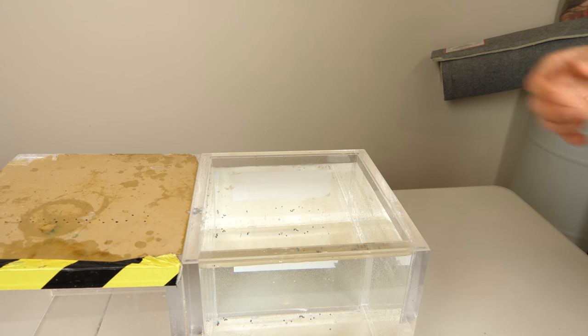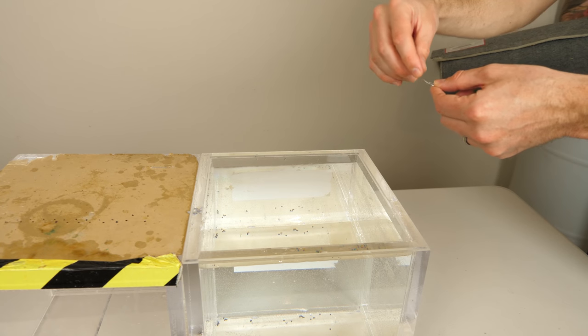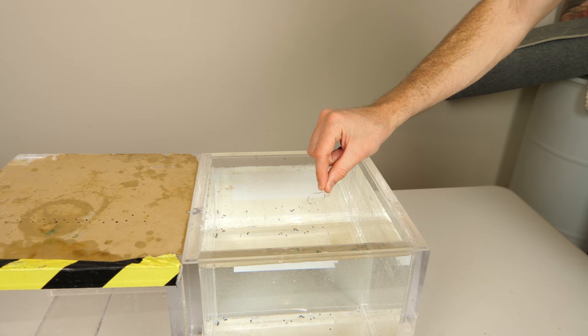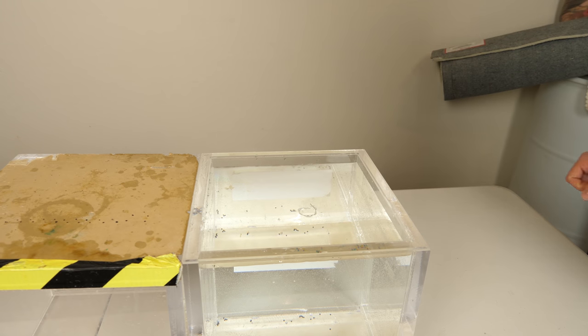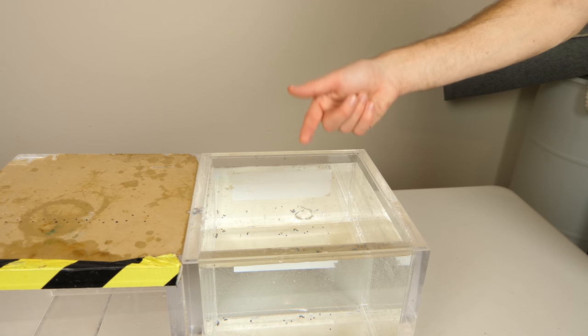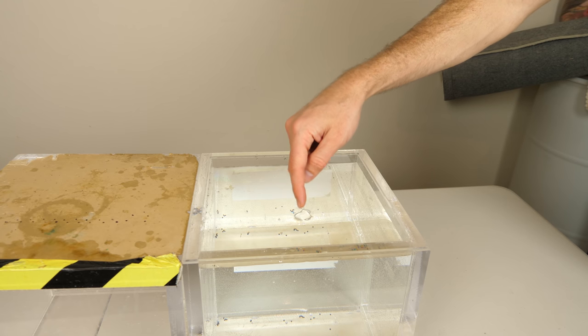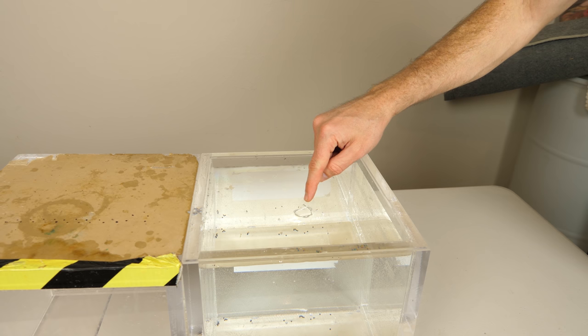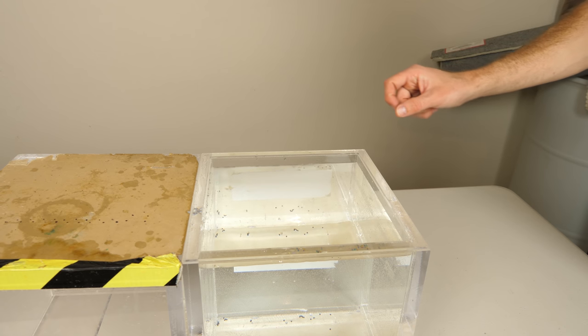So this same surface tension that stopped the water from falling out of the jar can also be used to float just regular things like pieces of wire on water. So even though this stainless steel is much more dense than water, it hasn't broken the surface tension of the water so it doesn't sink. But as soon as you break the surface tension, then it drops down.